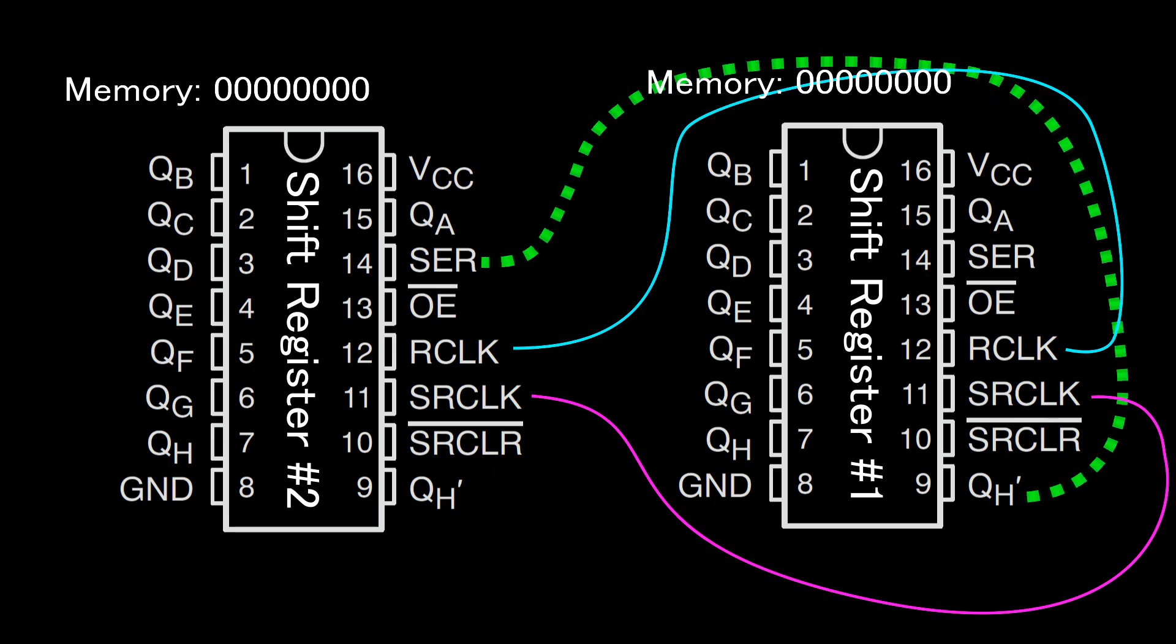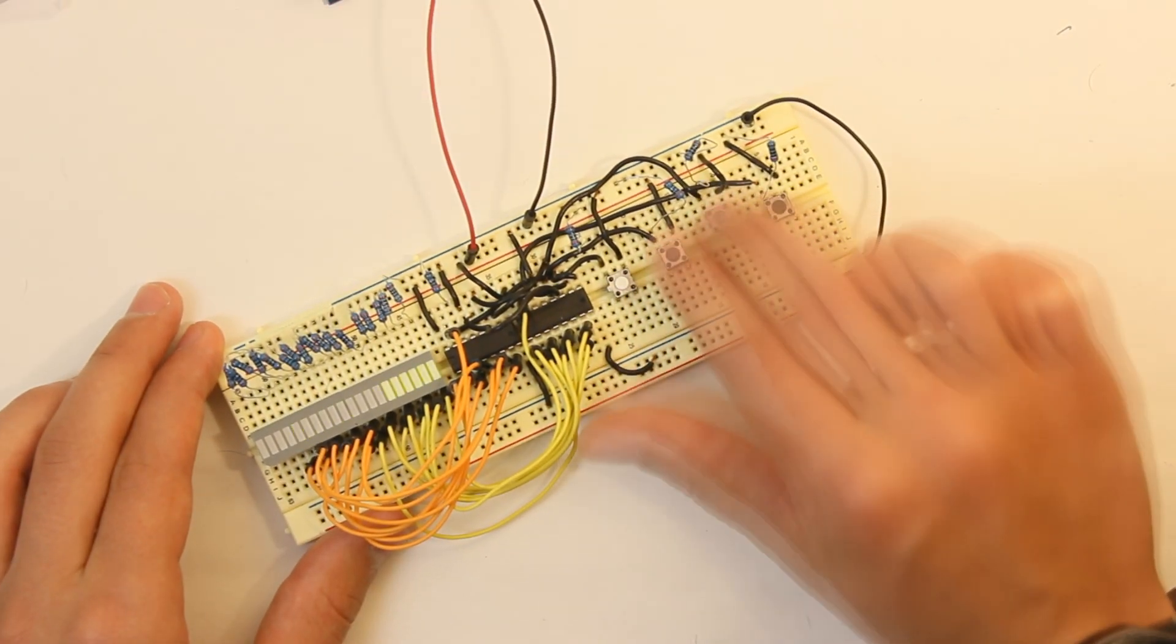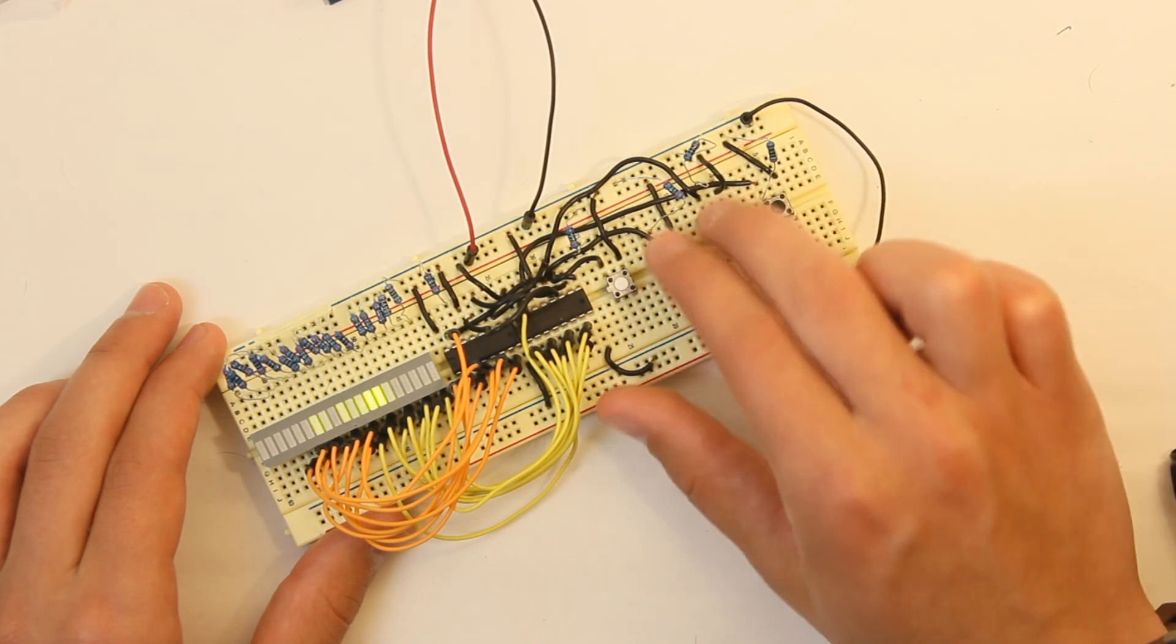This is because when the H' pin on one is connected to the data line on the other, the H' acts like one of the push buttons except it is late eight clock cycles. The H' pin puts whatever bit is about to overflow in the first shift register into the first place in the memory of the second shift register. This concept will get easier and easier to think about the more you play with shift registers.